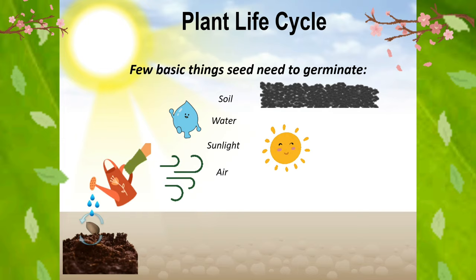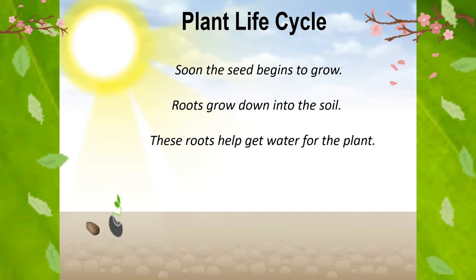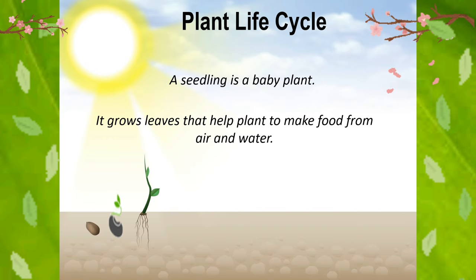Soon the seed begins to grow. Roots grow down into the soil. These roots help get water for the plant. Then comes a seedling — a baby plant. It grows leaves that help the plant to make food from air and water.